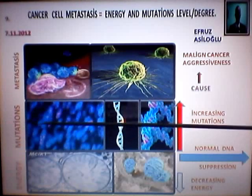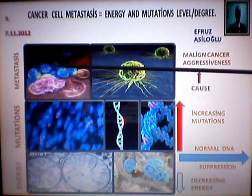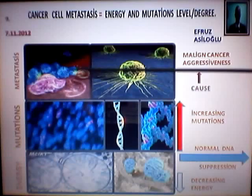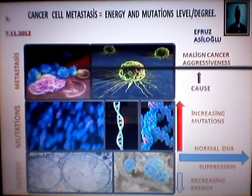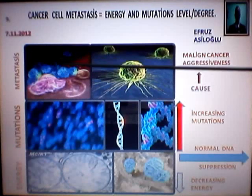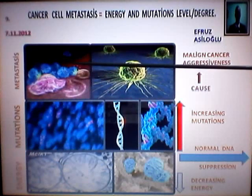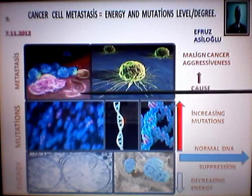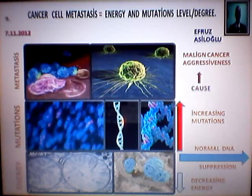Mutations, another step: metastasis. Blood. Cancerogenic cells in bad living conditions and suboptimal metabolic conditions make an obligatory effect to emigrate to another body area.